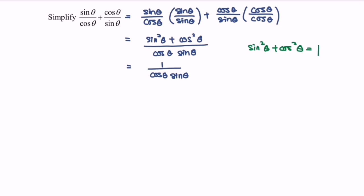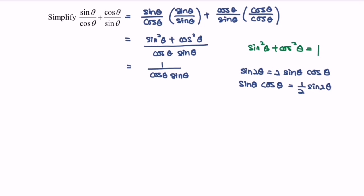Next, refer to the double angle identity where sin 2θ equals 2 sin θ cos θ. Rearranging, sin θ · cos θ equals (1/2) sin 2θ. So we have 1 over (1/2) sin 2θ. Flipping the situation, we get 2 over sin 2θ.